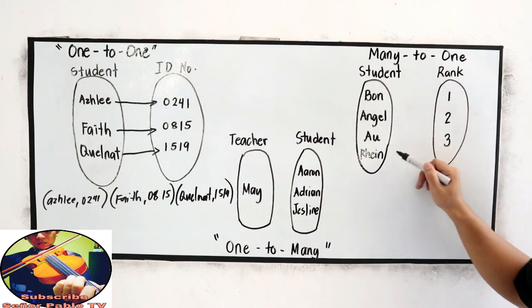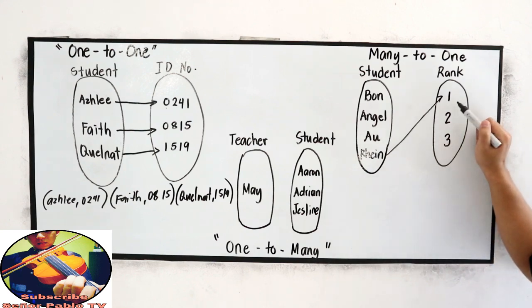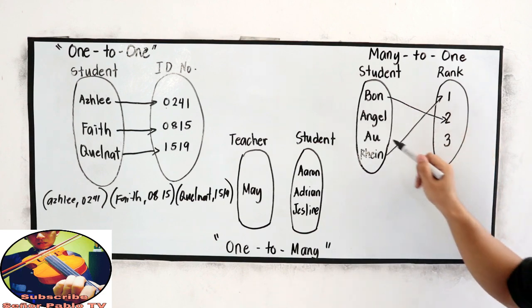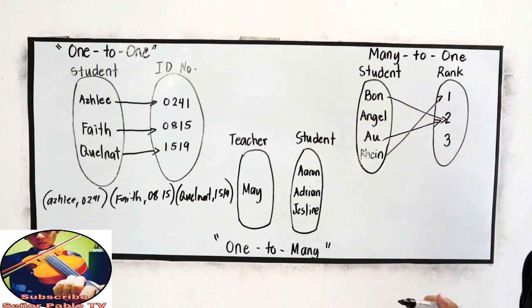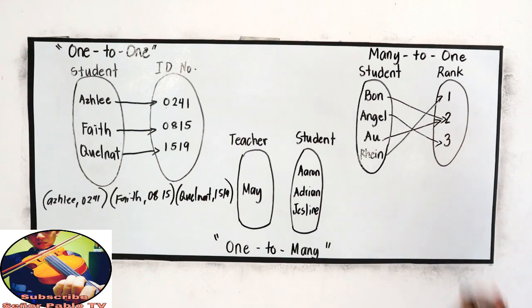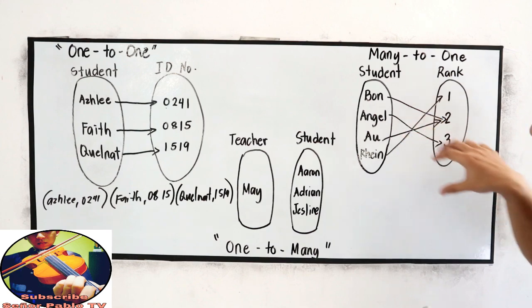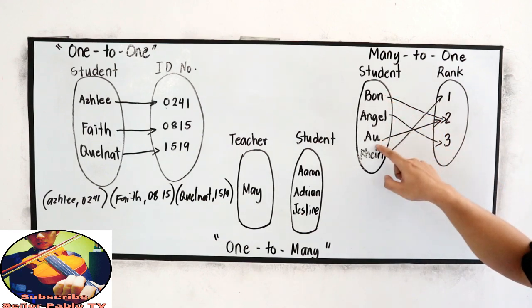Let's say, Rain as our rank 1. Bon and Au are our rank 2. And Angel will be the rank 3. We name it many-to-one because look at rank 2. It has a domain of 2 students, Bon and Au.